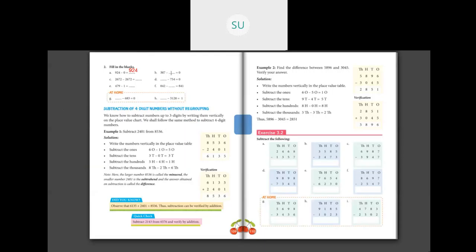387 minus blank equals 0. When do you get 0 in subtraction? When you subtract a number from itself. So 387 minus 387 equals 0. Now 2672 minus 2672 equals blank — when you subtract a number from itself you get 0. Then blank minus 754 equals 0. This is the subtracting-itself property: 754 minus 754 equals 0.